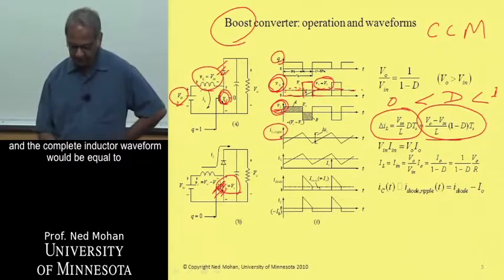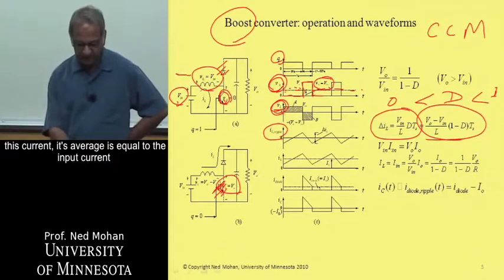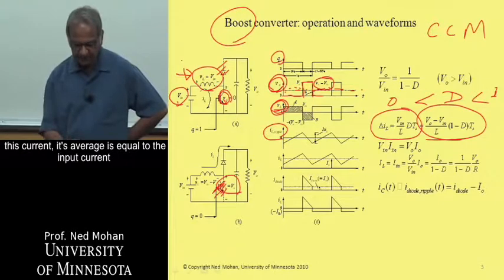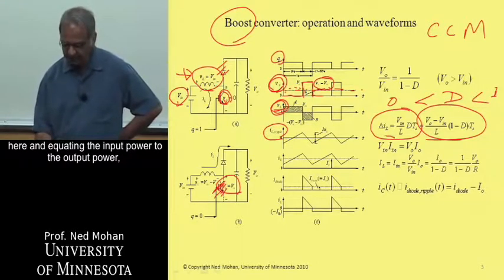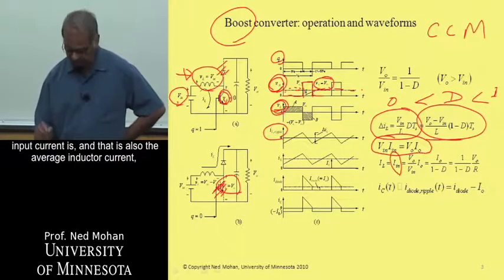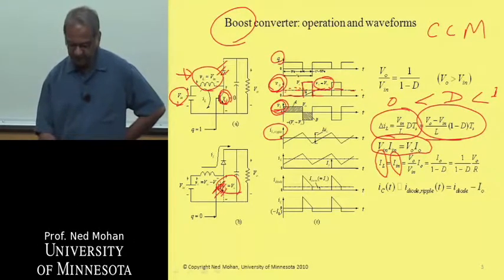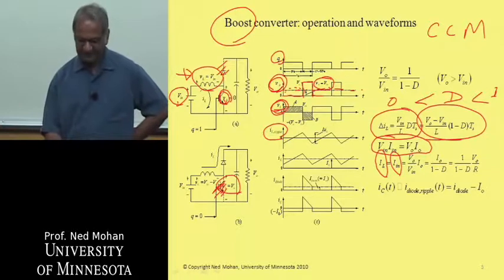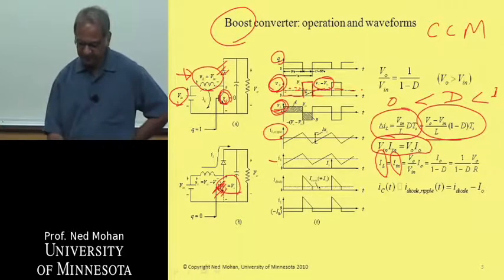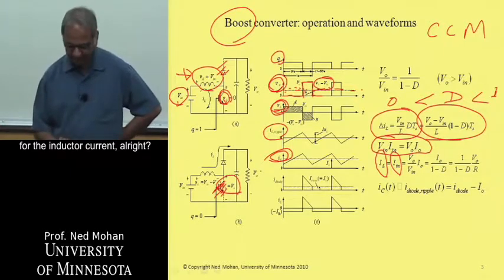The complete inductor waveform would be equal to this current. Its average is equal to the input current here. Equating the input power to the output power, we can find out what this average input current is, and that is also the average inductor current. And if we superimpose on it the ripple in this inductor current, then we get the complete waveform for the inductor current.